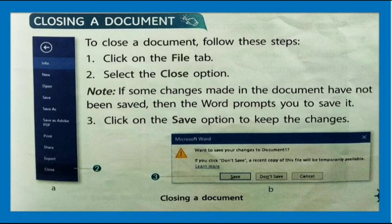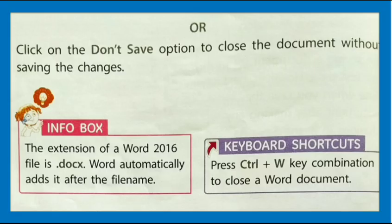Closing a document: to close a document, follow these steps. Click on the File Tab and select the Close option. Note: if some changes made in the document have not been saved, Word prompts you to save it. Click Save to keep the changes, or click Don't Save to close the document without saving the changes.